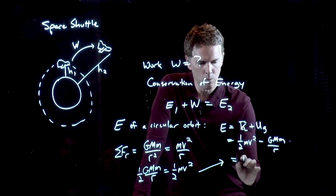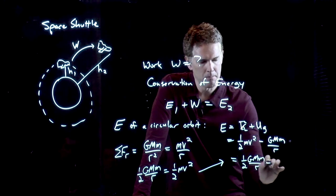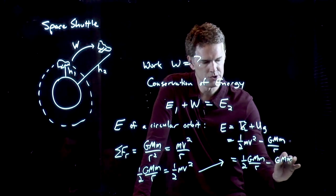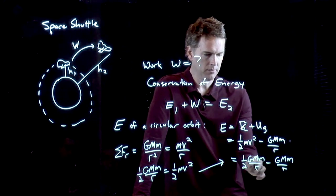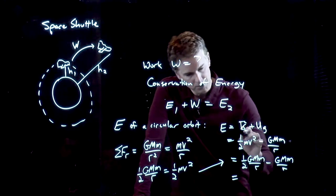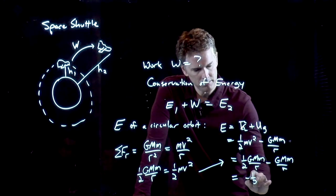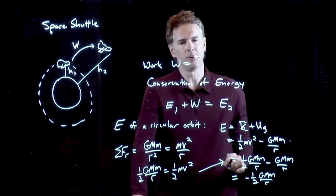Look what we get. We get 1/2 GMm over r minus GMm over r. But that has common factor GMm over r. So it just becomes 1/2 minus 1, which is negative 1/2, so negative 1/2 GMm over r.